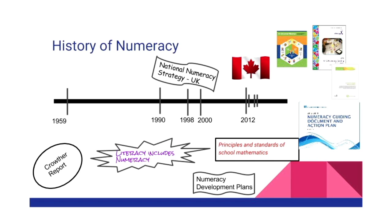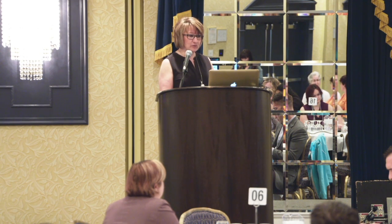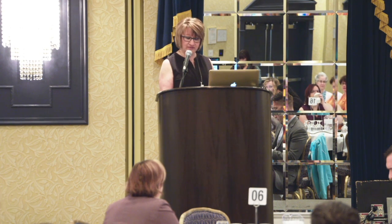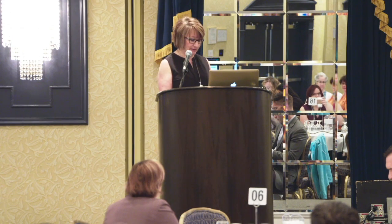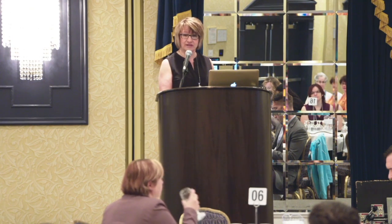In 1959, the Crowther Report came out and coined numeracy to be a companion skill to literacy — separate but complementary domains of competencies. This report described numeracy as the mirror image of literacy. Numeracy had to deal with the quantitative aspects of everyday life, and literacy was the ability to deal with the demands of reading and writing.